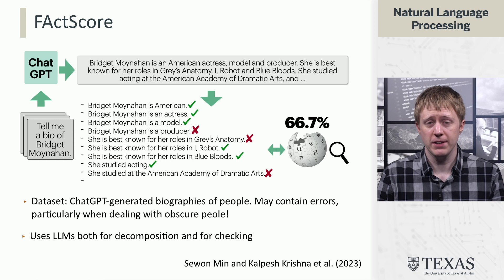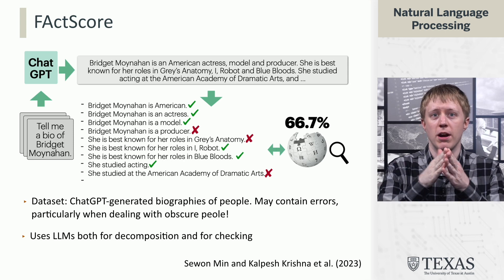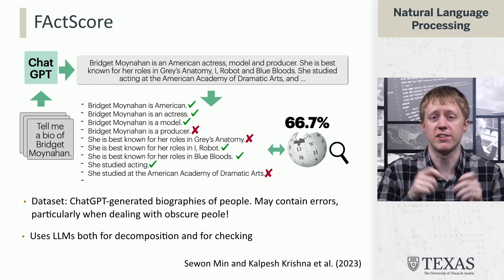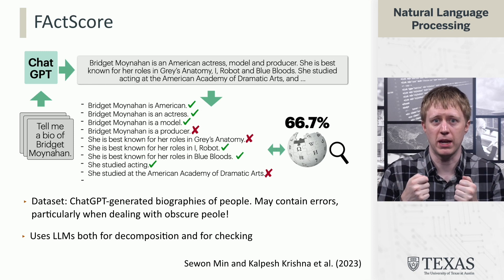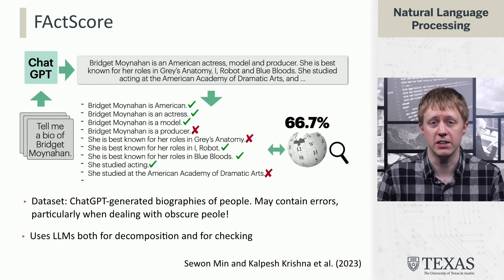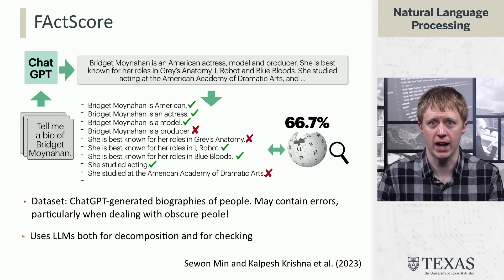There have been some recent systems, including one called FActScore, that implement these sorts of ideas. It breaks things down into propositions and then tries to validate each of those against Wikipedia. It uses large language models for all of these pieces, so it doesn't use textual entailment directly, but it's achieving the same goals as some of these earlier systems.